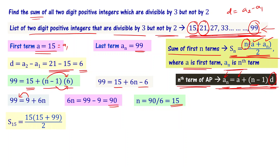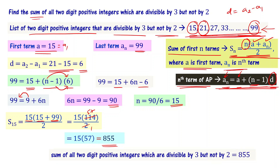Now applying the sum formula: S15 = 15 × (15 + 99) / 2 = 15 × 114 / 2 = 15 × 57 = 855. So the sum of all 2-digit positive integers which are divisible by 3 but not by 2 is 855.